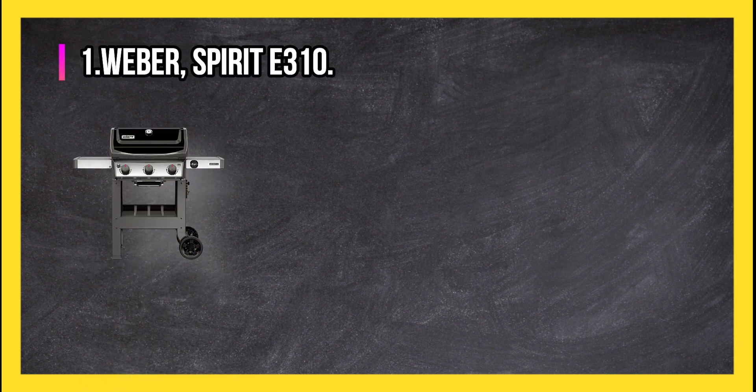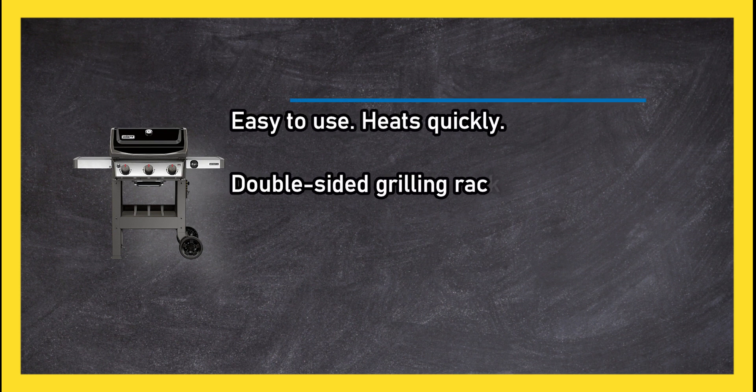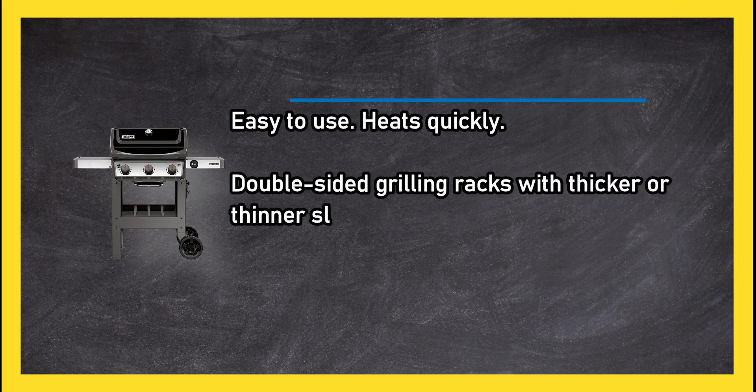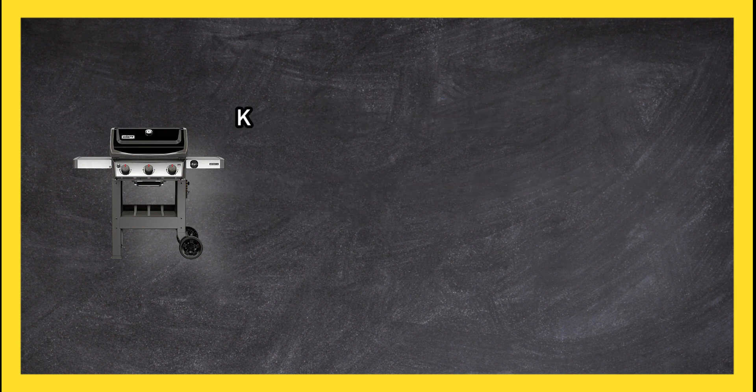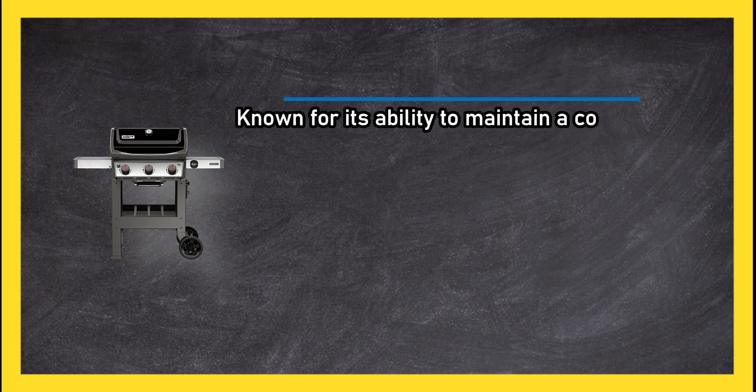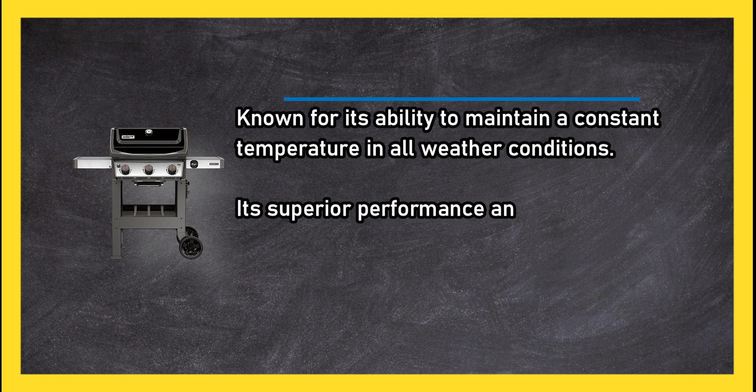At number one, Weber Spirit E310. Easy to use, it's quickly double-sided grilling racks with thicker or thinner slats. Known for its ability to maintain a constant temperature in all weather conditions, its superior performance and unparalleled feature set are well worth the few extra dollars that you will spend.